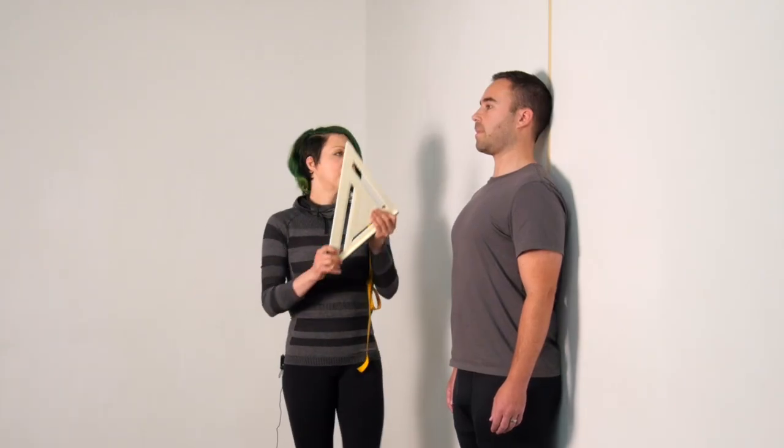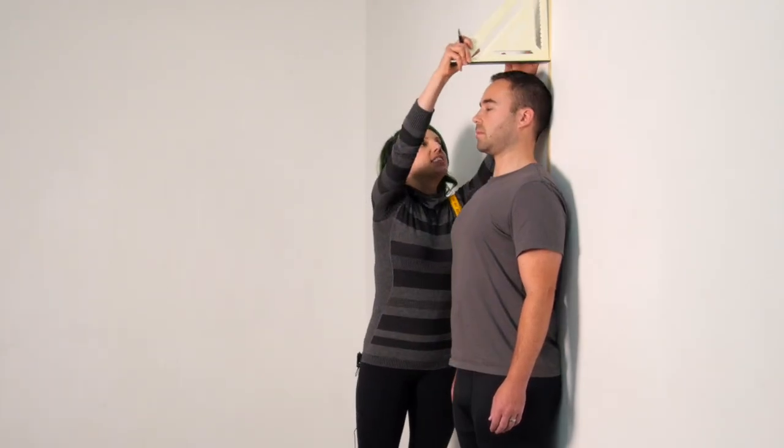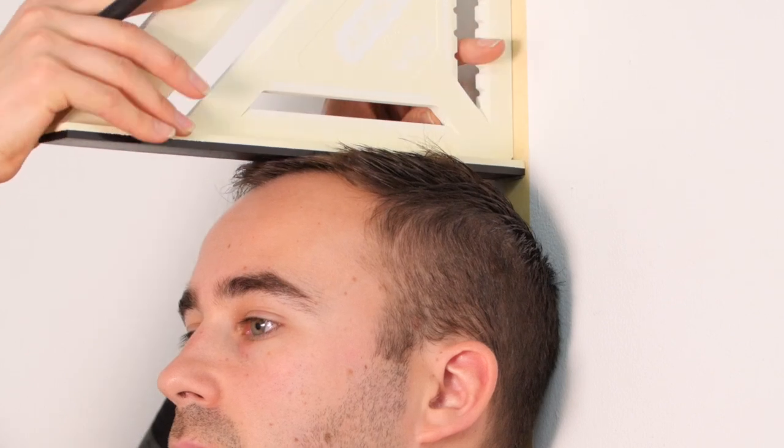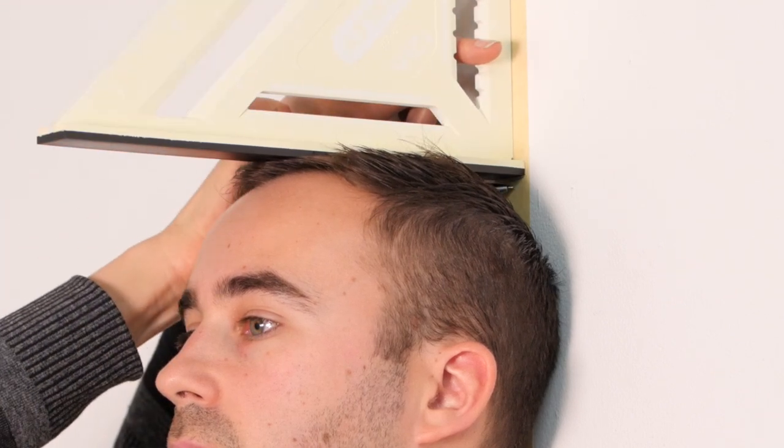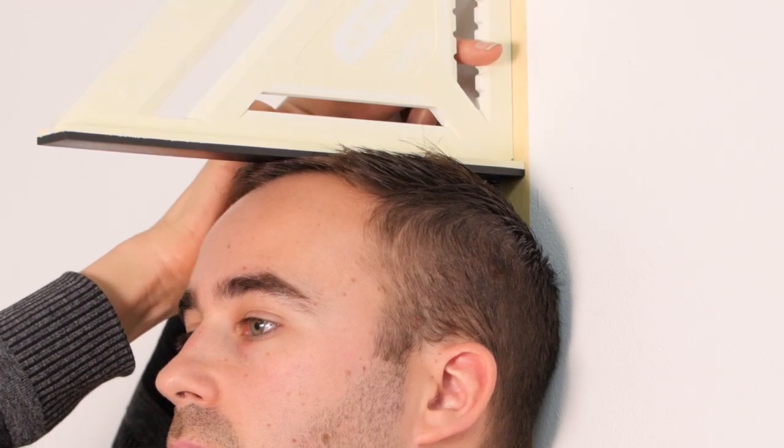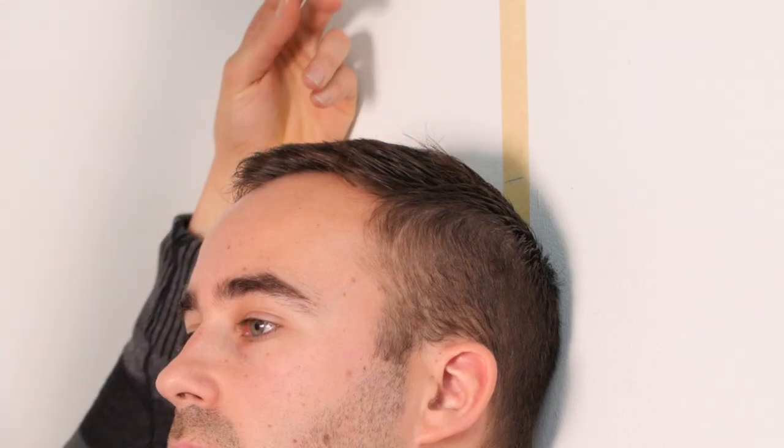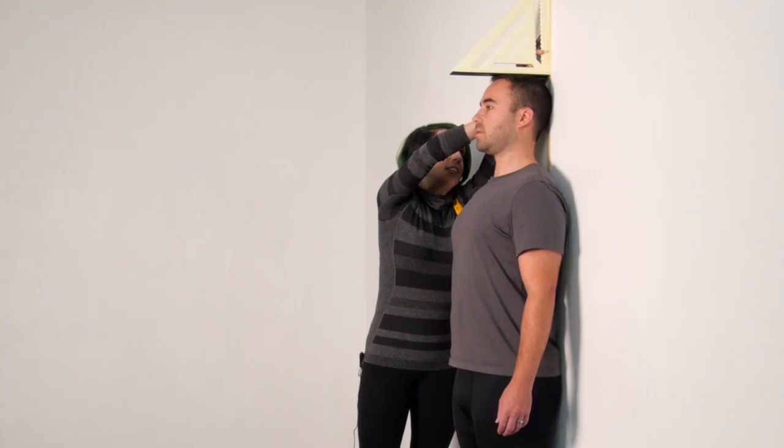With your diver standing straight, place the tool on top of the diver's head and square it to the wall. Once you've got the level, mark your tape.